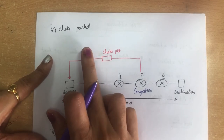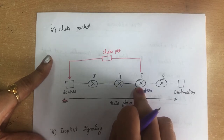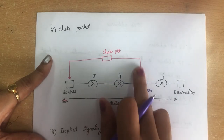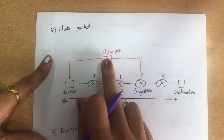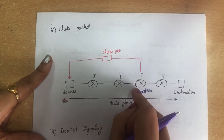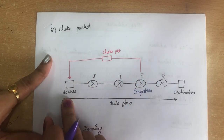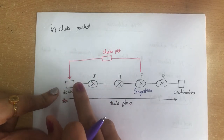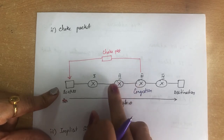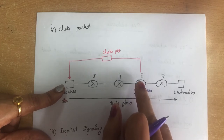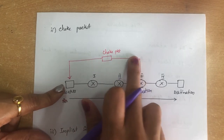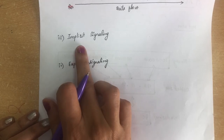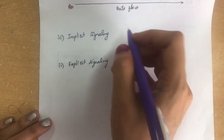The second method is choke packet. When congestion occurs in router R3, instead of sending a warning hop-by-hop, a special packet called a choke packet is sent directly from R3 to the source to reduce the input flow. The main difference from back pressure is that in back pressure the warning moves hop-by-hop, while the choke packet is sent directly to the source.